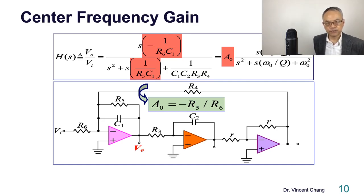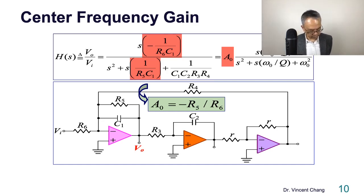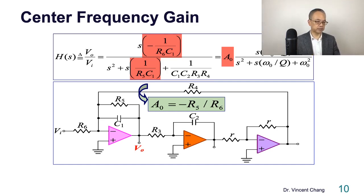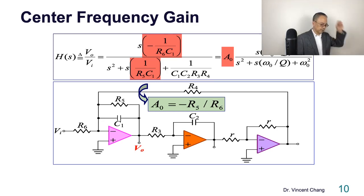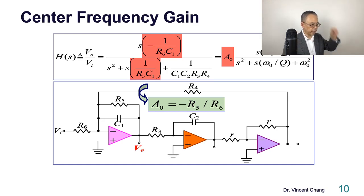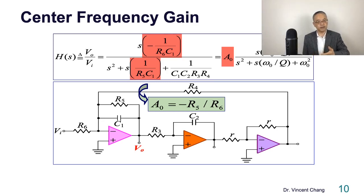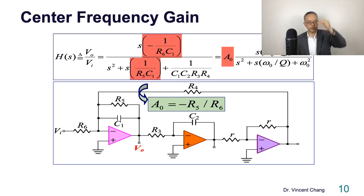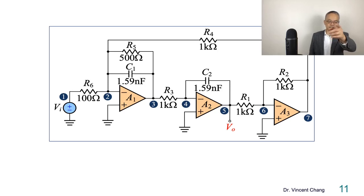The ratio of those two highlighted terms gives the center frequency gain. If you're struggling to follow, you can pause here. The title is 'center frequency gain.' You replace ω with ω₀ and find that the s² term and the ω₀² term cancel out, so the first-order coefficient ratio tells you the gain at that frequency. The answer is negative R5/R6.